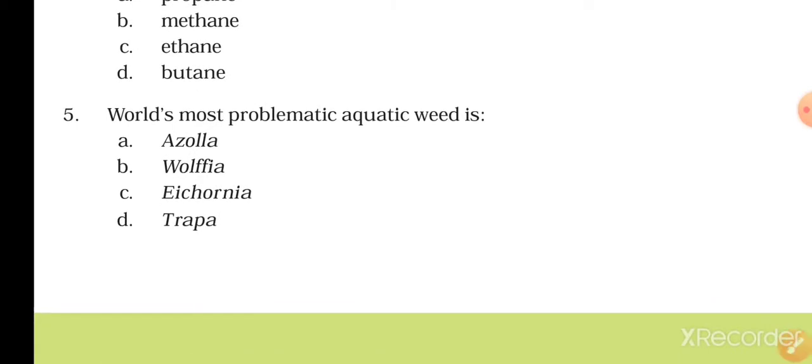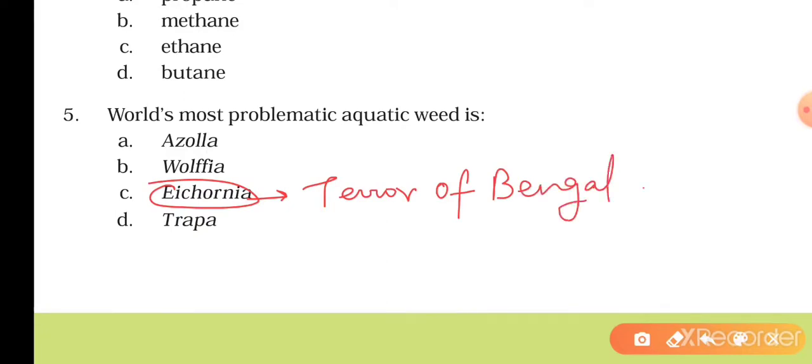The fifth question is: world's most problematic aquatic weed is Azolla, Wolfia, Eichhornia, or Trapa. The right answer will be Eichhornia. It's also known as terror of Bengal due to its very high growth rate, so it's the most problematic aquatic weed, Eichhornia.